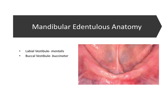Next we still have the same vestibules. We have the labial vestibule, which runs from buccal frenum to buccal frenum — the space between the ridge and the labial mucosa and the lips. A muscle forms the inferior border of this vestibule: the mentalis muscle, associated with the chin area, attaches to this ridge in the labial vestibule. So the inferior border of that vestibule is limited based on how high the mentalis muscle is attaching to the ridge.